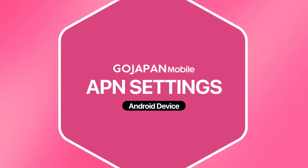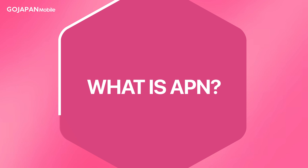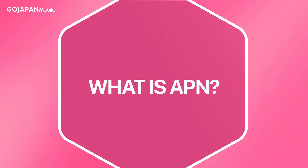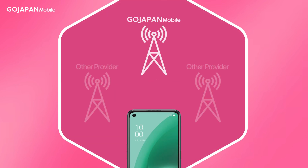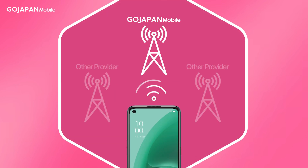Thank you for purchasing GoJapan's mobile service! Access Point Name, or APN, is a setting that acts as the bridge between your GoJapan cellular network and the public internet.